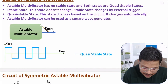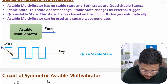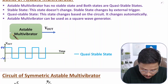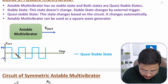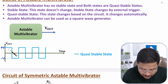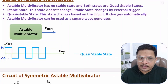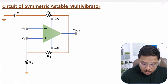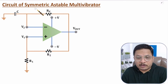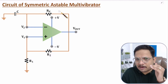In the astable multivibrator, the output has two states: plus V voltage and minus V voltage. We don't give any external trigger — the transition from plus V to minus V and from minus V to plus V happens automatically. That's why the output is a square wave. Now, the symmetric astable multivibrator — symmetric means T-on and T-off time periods are equal.